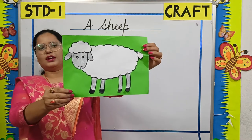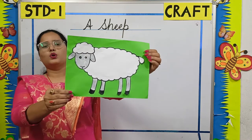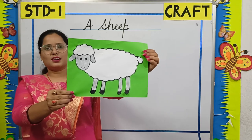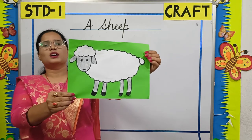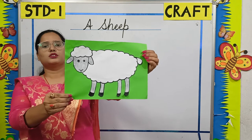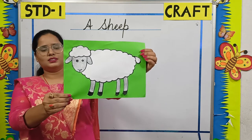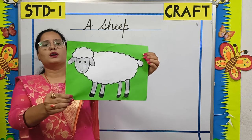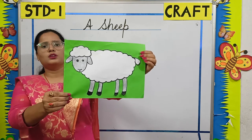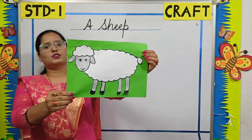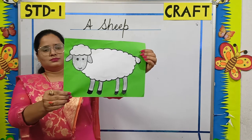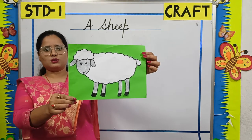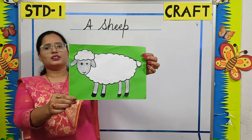Children, can you all see this? What is this? Yes, it is a sheep. A sheep is a domestic animal. It gives us wool. We use wool to make woolen clothes. We wear woolen clothes in a winter season.